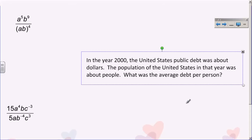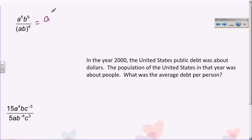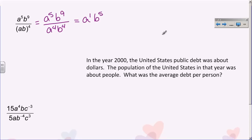The next example has a's and b's: a to the fifth, b to the ninth, over ab, all to the fourth. We have to go back to multiplication properties of exponents and distribute this four to everything inside. So this really is a to the fifth, b to the ninth, over a to the fourth, b to the fourth. Now subtract exponents with like bases. For the a's, five minus four is one, so it's a to the first. For the b's, nine minus four is five. You can write a to the first or just a — they mean the same thing.